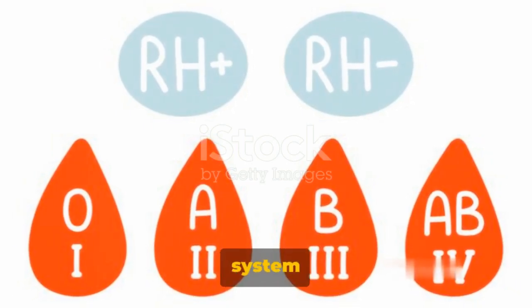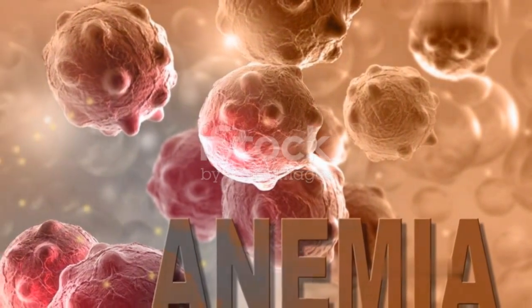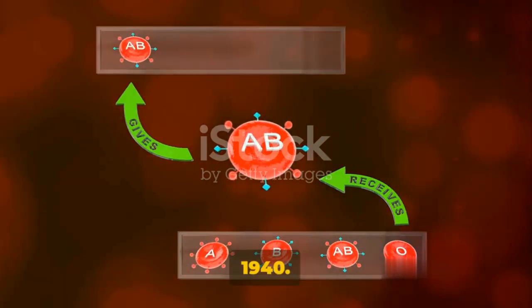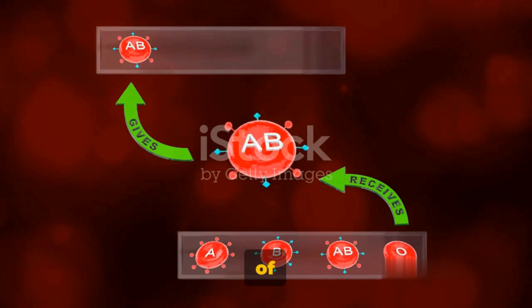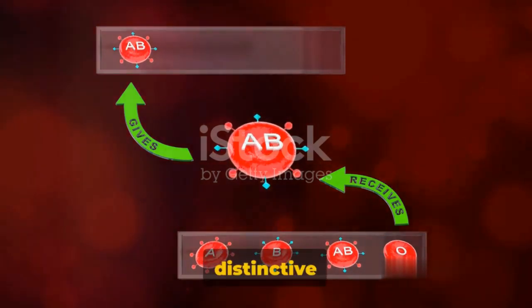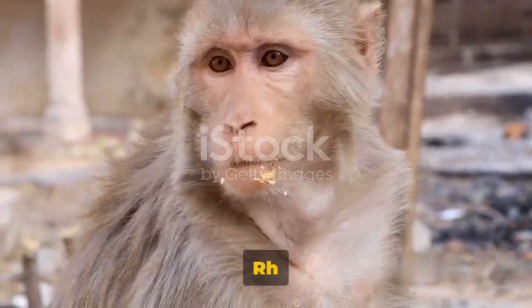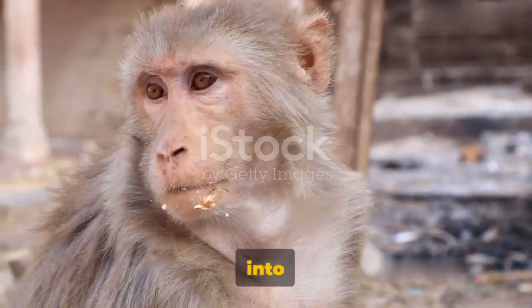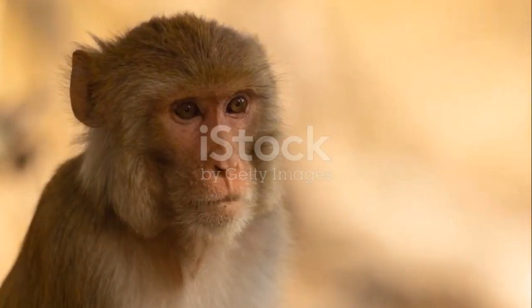Do you know what the RH blood group system is? It's a key human blood group system discovered by Carl Landsteiner and Alexander Wiener back in 1940. Their groundbreaking work led to the identification of RH antigens — distinctive markers found in the membrane of our red blood cells. These RH antigens became the basis for classifying human blood into two types: RH positive and RH negative.